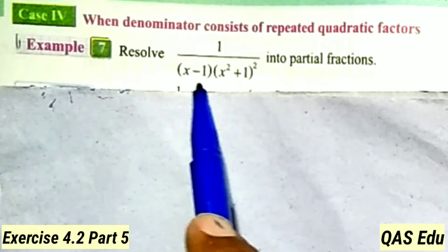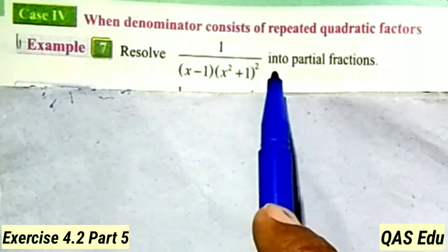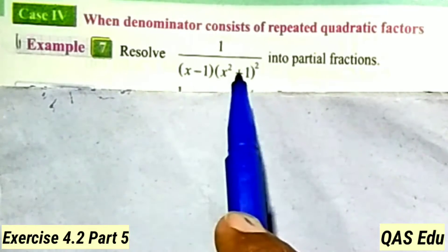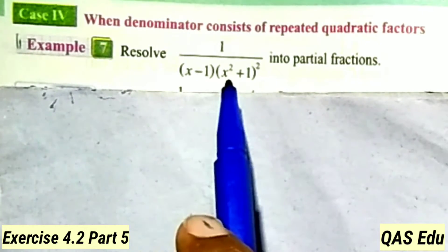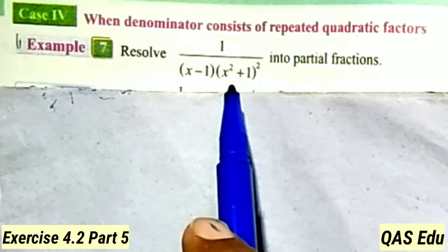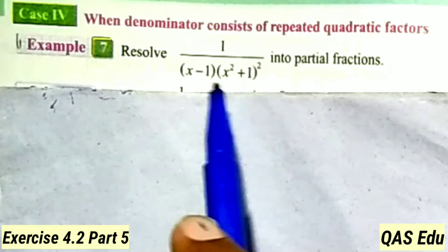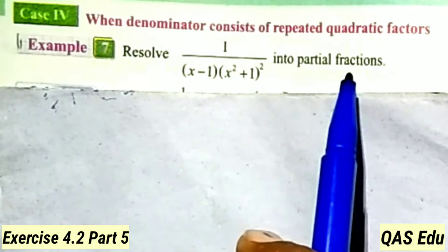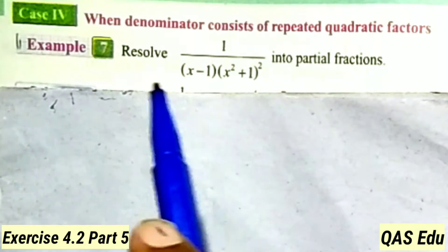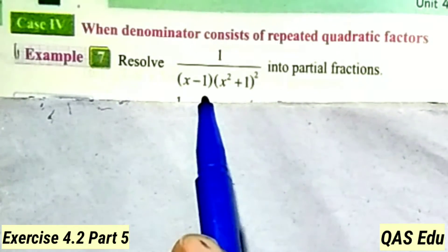Resolve 1 over x minus 1 into x square plus 1 whole square into partial fractions. This fraction is called a partial fraction. Here we can resolve question number six.